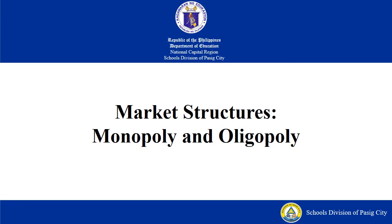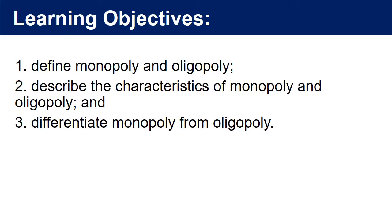Hi everyone. For today's topic, let us have market structures: Monopoly and oligopoly. At the end of the lesson, the learners should be able to define monopoly and oligopoly, describe the characteristics of monopoly and oligopoly, and differentiate monopoly from oligopoly.